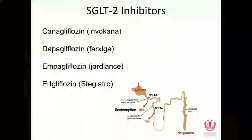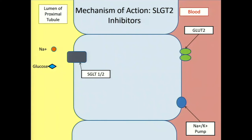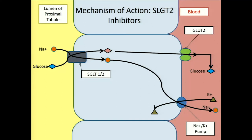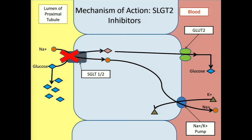Let's talk about SGLT2 inhibitors — the list of medications includes empagliflozin, canagliflozin, and others. As a reminder of how they work: in the proximal tubule nephron, we have the sodium-glucose co-transporter that takes up glucose along with sodium, which gets transported back into the blood through GLUT2 channels. SGLT2 inhibitors block that uptake of glucose into the blood, resulting in more glucose excreted in the urine by overcoming the normal reabsorption threshold of about 150 mg/dL.